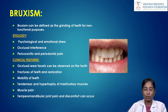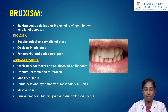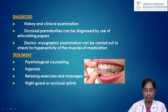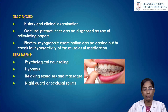Bruxism is defined as grinding of teeth for non-functional purposes. Etiology includes psychological and emotional stress, occlusal interferences, pericoronitis, and periodontal pain. Clinical features include occlusal wear facets, fractures of teeth and restorations, tooth mobility, tenderness and hypertrophy of the masseter and masticatory muscles, muscle pain, and temporomandibular joint pain and discomfort. Diagnosis involves history, clinical examination, articulating paper for occlusal prematurities, and electromyographic examination for hyperactivity of masticatory muscles. Treatment includes psychological counseling, hypnosis, relaxing exercises and massage, and night guard or occlusal splints.